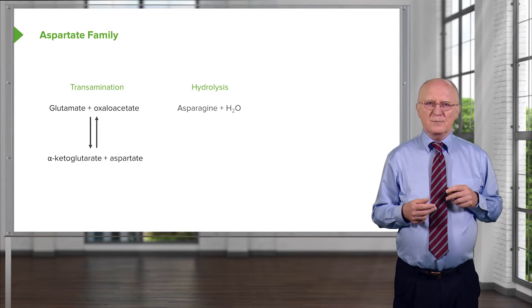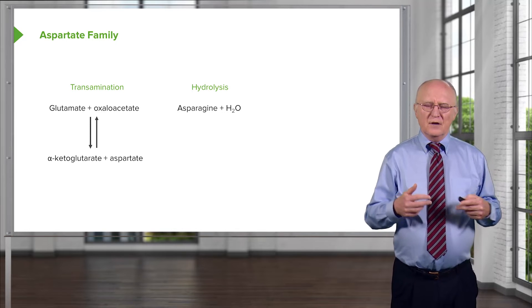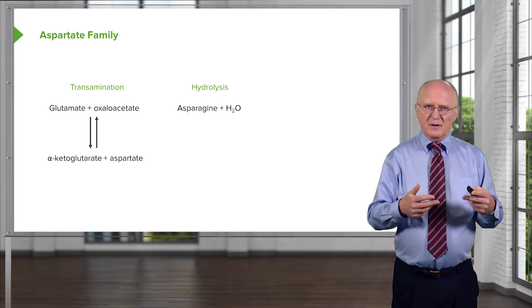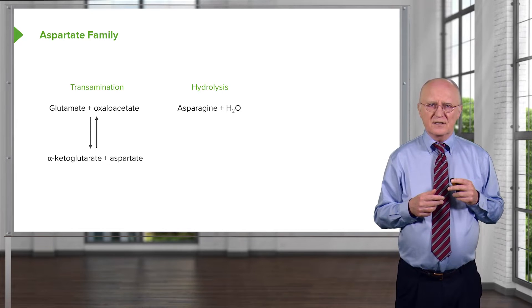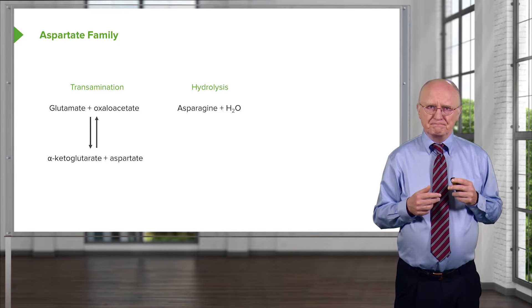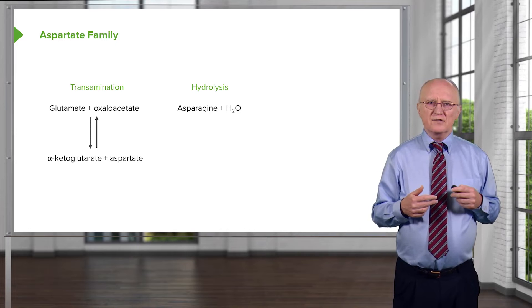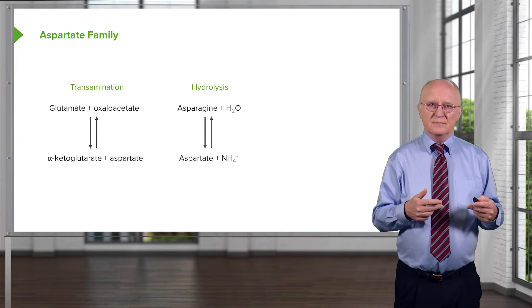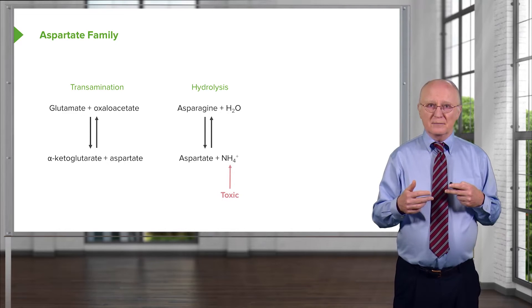Another way of making aspartate is by hydrolysis. This is a reversal of the synthesis of asparagine in a way. Now we'll see later it's not the exact reversal of the synthesis of asparagine. Asparagine can be cleaved using water in a hydrolysis reaction to produce aspartate, and there's that ammonium ion again.